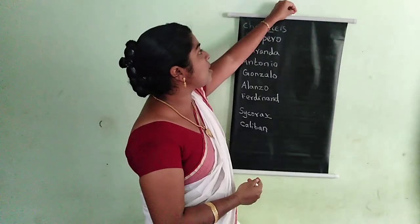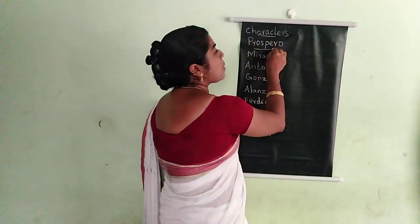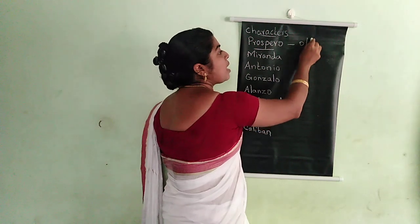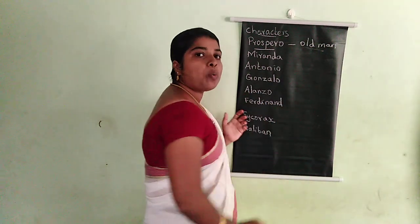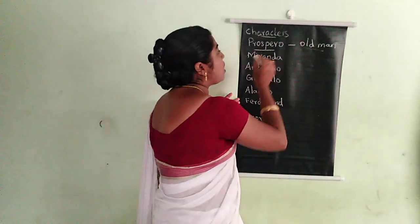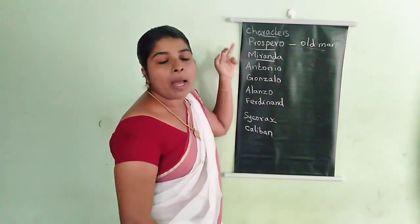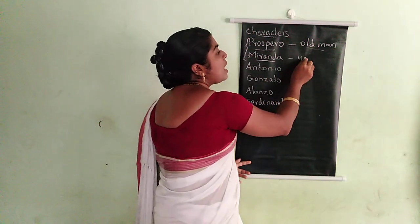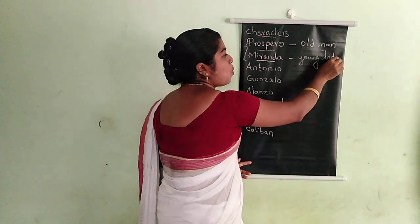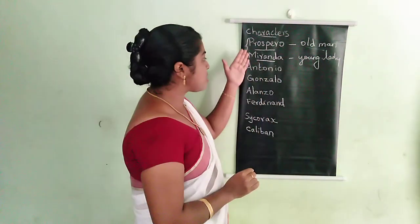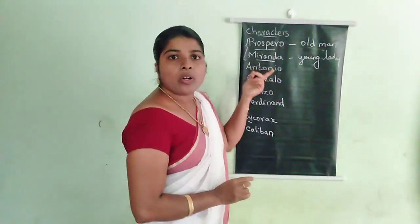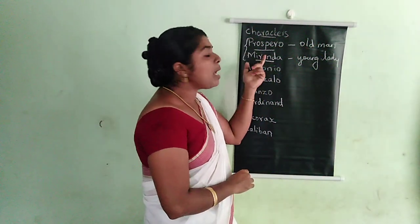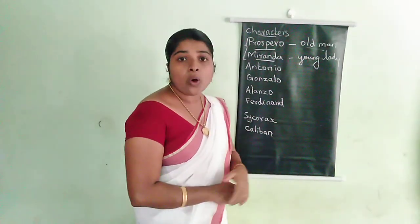The main character of the play is Prospero. He is an old man when the story begins. And Miranda is the daughter of Prospero — so father and daughter. She is a young lady. Then Antonio, the third character — he is the brother of Prospero. So: Prospero is an old man, Miranda is his daughter, and Antonio is his brother.